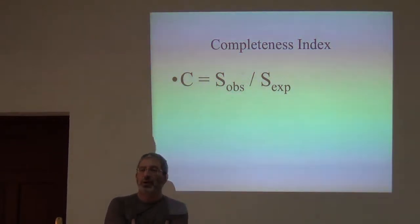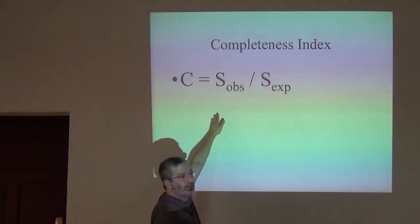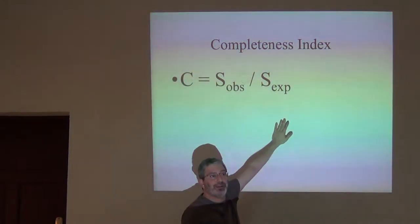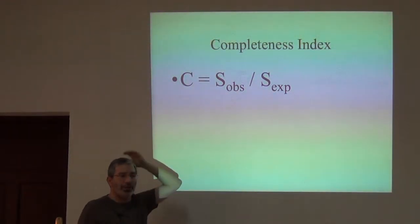It's just whatever the total number of species is that we think is in the flora or fauna, how many of them, what proportion of them have we observed? So all we're doing is we're taking the observed number and dividing it by the expected number. That's it. That is our index of completeness.